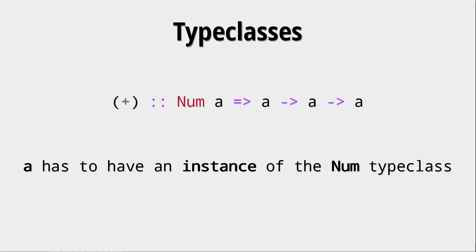Now, what does that mean? Well, we will look at the Num type class in a second. But a type class basically defines some functions that need to be defined in a class. And for a type to be in that type class, it has to have an instance of such a class. Again, we will look at an example in a second.